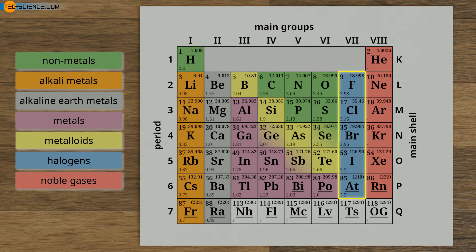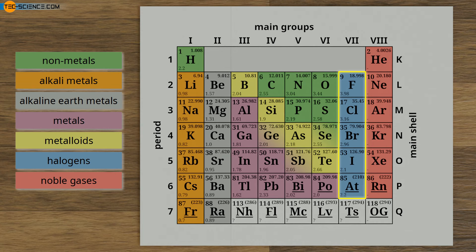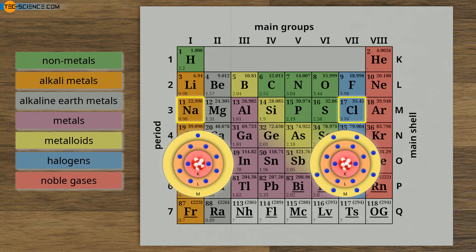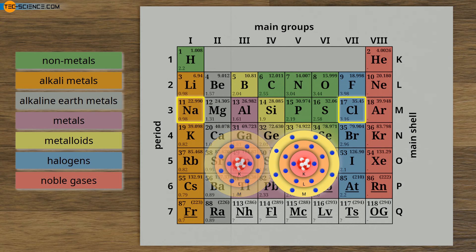Let us now take a closer look at the seventh main group — the so-called halogens — all of which have 7 outer electrons in the valence shell. The halogens include fluorine, chlorine, bromine, iodine, and the rarest naturally occurring element astatine, which is radioactive and used to irradiate tumors. With 7 outer electrons, the halogens lack only 1 electron to achieve the noble gas configuration. If these elements have not already reacted with themselves, they are very reactive, especially in the presence of alkali metals, because the one weakly bound outer electron of the alkali metals can be used to achieve the noble gas configuration. For example, table salt — sodium chloride — is the result of such a reaction.